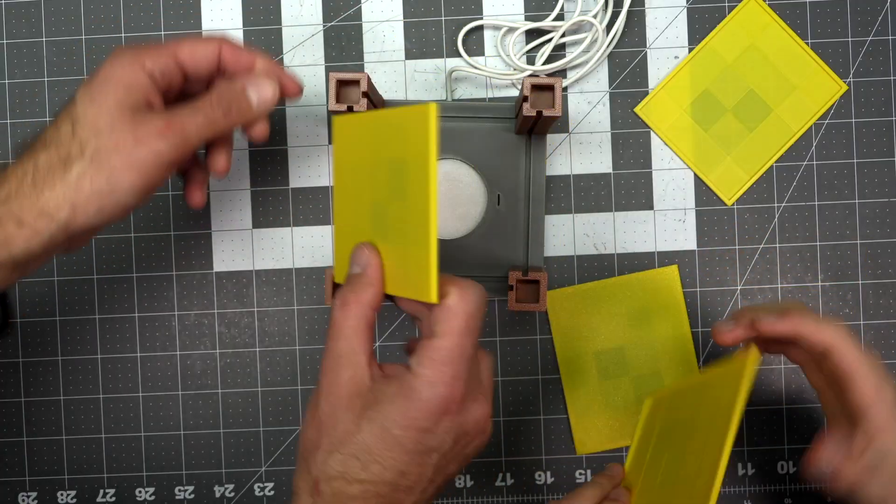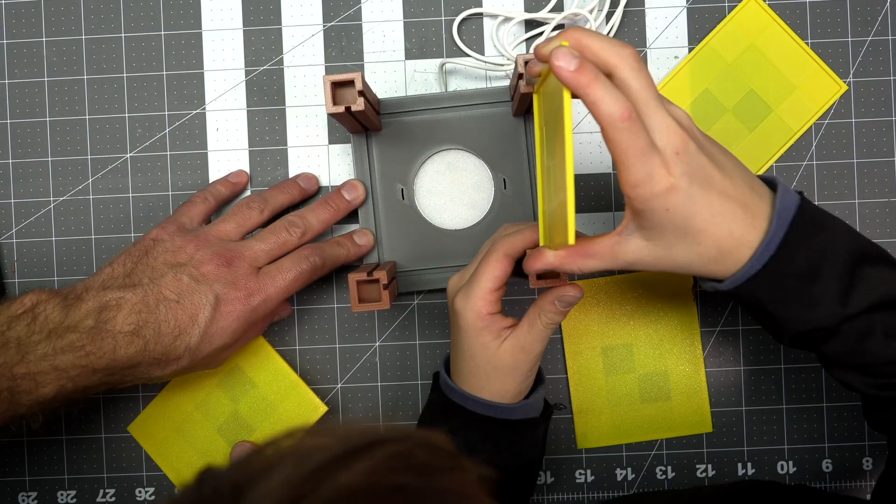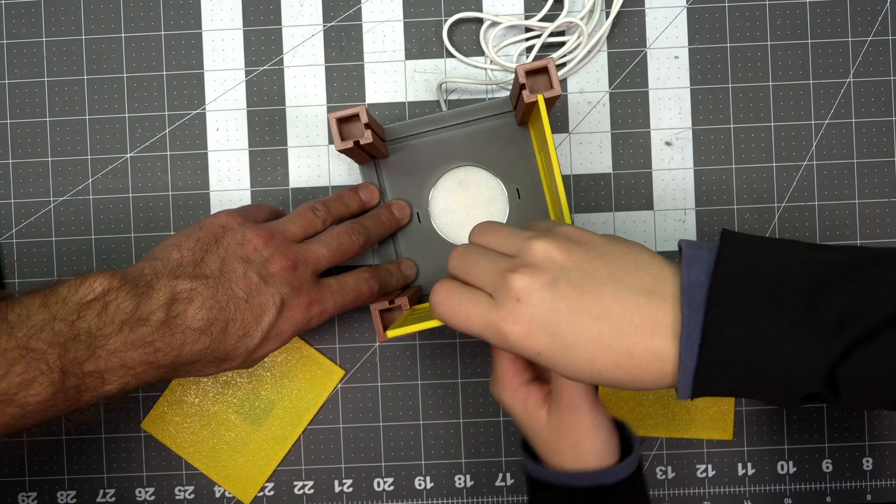Then slide in all four of the yellow lampshade pieces into the slits. Make sure the flat side is facing outwards.